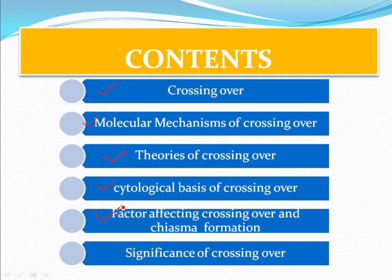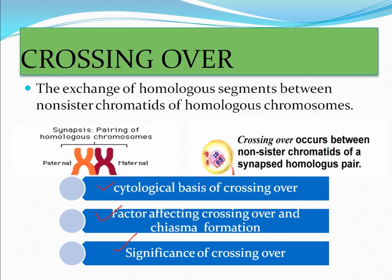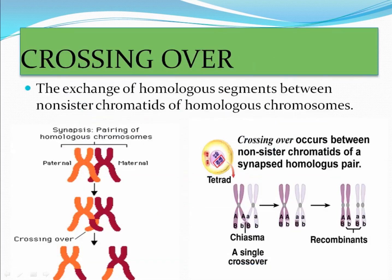I will also cover the cytological basis of crossing over, factors affecting crossing over, chiasma formation, and significance of crossing over. In this video I will discuss some of these components. The term 'crossing over' was given by Morgan and Castle in 1912. This video is exclusively for UG students and JRF students, covering very important and fundamental things.